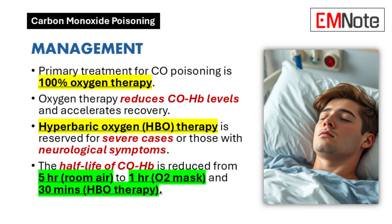Management: The primary treatment for carbon monoxide poisoning is oxygen therapy. Administering 100% oxygen significantly reduces carboxyhemoglobin levels and accelerates recovery. Hyperbaric oxygen (HBO) therapy can further decrease these levels but is typically reserved for severe cases. The half-life of carboxyhemoglobin can be reduced from approximately 5 hours on room air to 1 hour with supplemental oxygen, and to about 30 minutes with hyperbaric therapy.